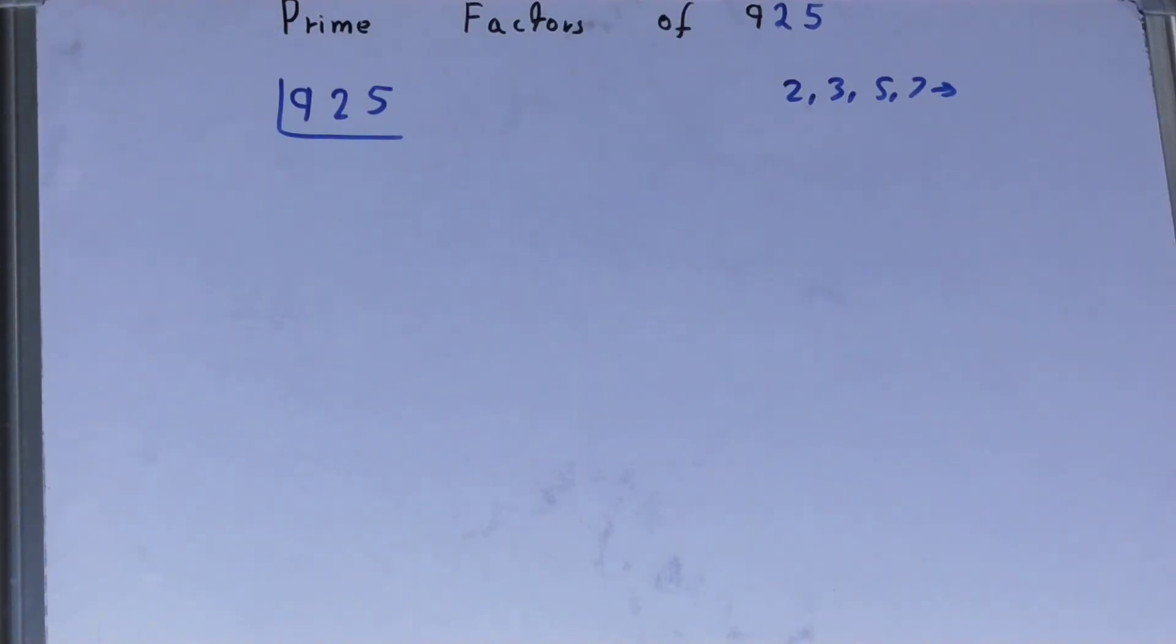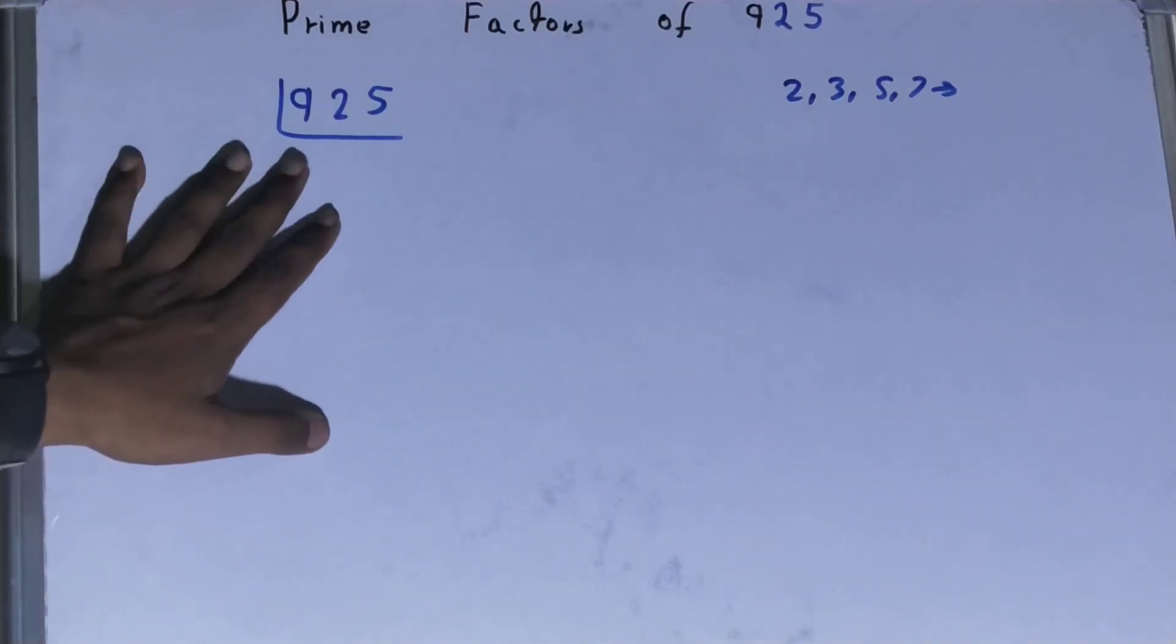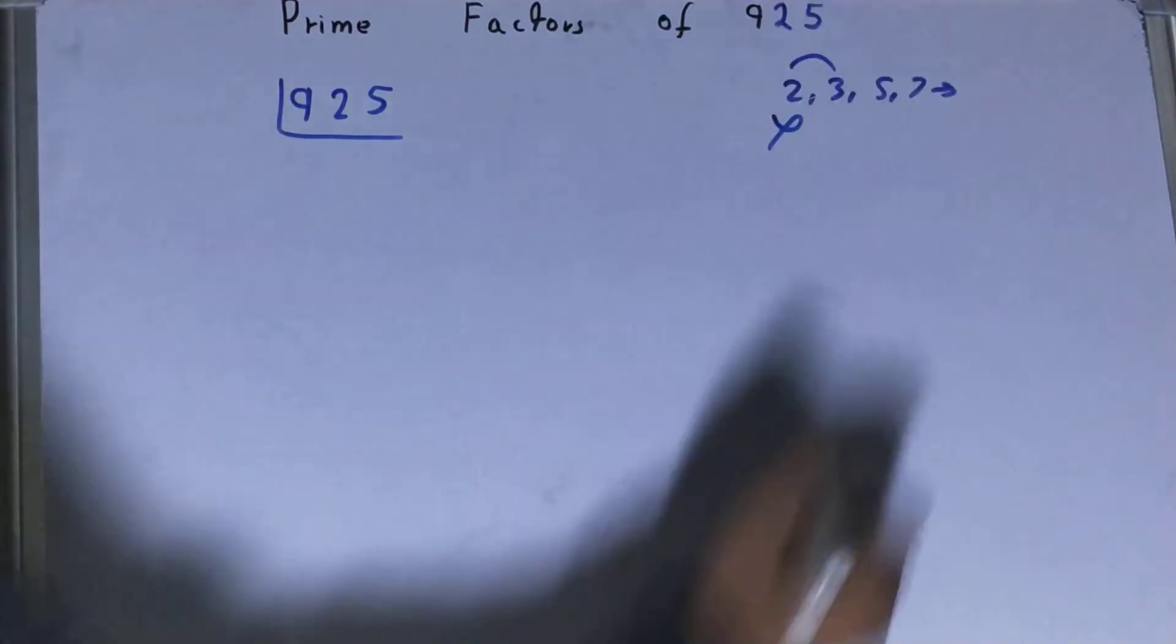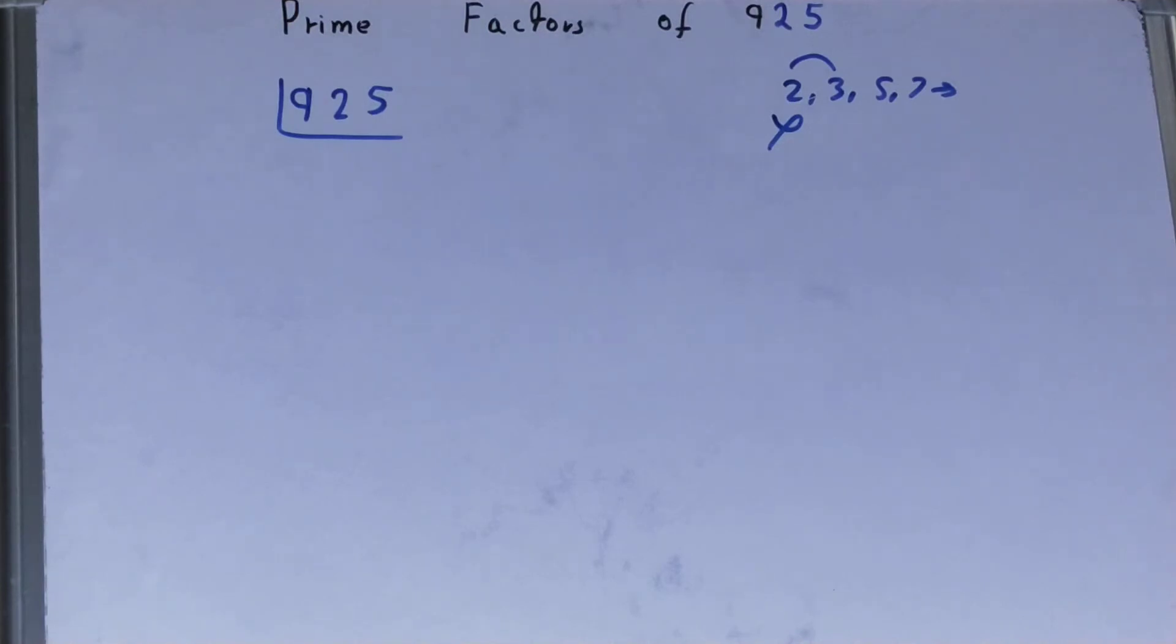...the lowest prime number we have, that is 2. Is the number 925 divisible by 2? Clearly not, because it is an odd number. So we'll be going to the next lowest prime number, that is 3. Is...